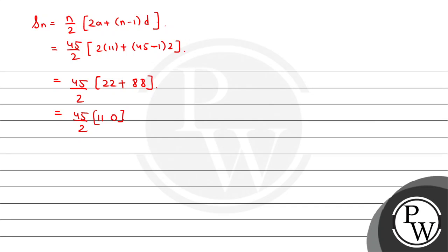This equals 45/2 × 110 = 45 × 55 = 2475. So the sum is...